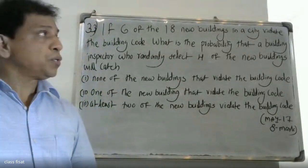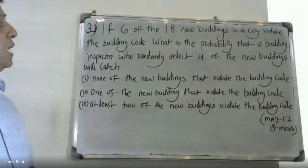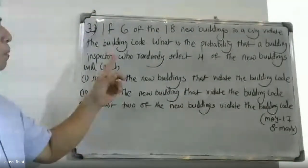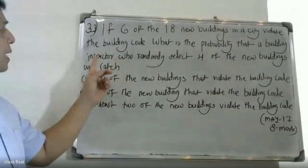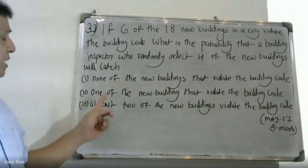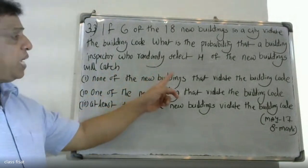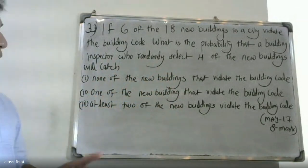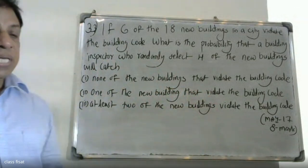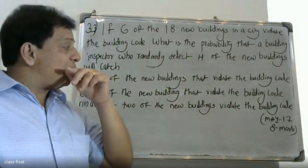Good morning students. University question: if 6 of the 18 new buildings in a city violate the building code, what is the probability that a building inspector who randomly selects four of the new buildings will find: first question, none of the new buildings that violate the building code; second question, one of the new buildings that violate the building code; third question, at least two of the new buildings that violate the building code.